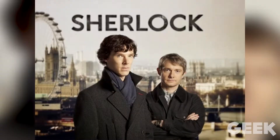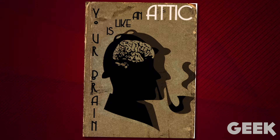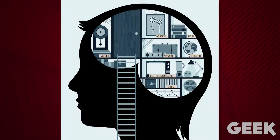While it's covered a bit more in BBC's Sherlock than Elementary, attic theory is something that's a key point to the way Sherlock thinks and the way his mind works. Attic theory, or the brain attic, is an analogy to describe the way the brain stores and retrieves information. This makes things actually much easier to break down.